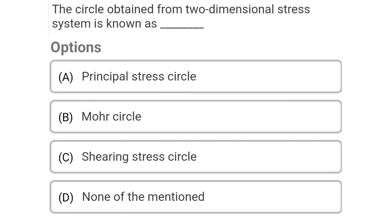Next question: The circle obtained from a two-dimensional stress system is known as — Option A: principal stress circle, Option B: Mohr's circle, Option C: shearing stress circle, Option D: none of mentioned. The correct answer is Option B: Mohr's circle.